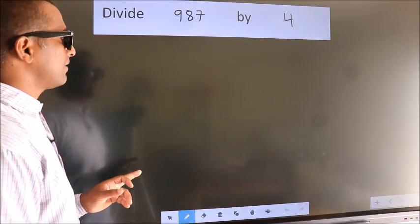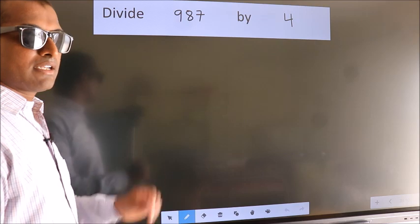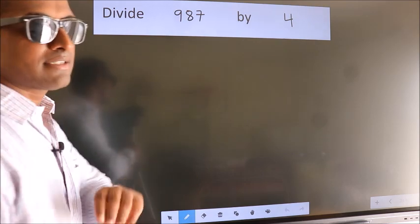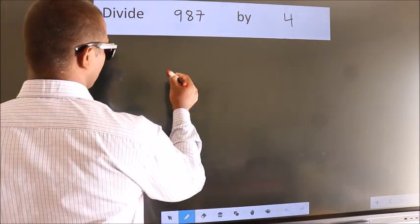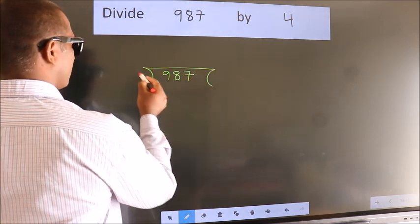Divide 987 by 4. To do this division, we should frame it in this way: 987 here, 4 here.